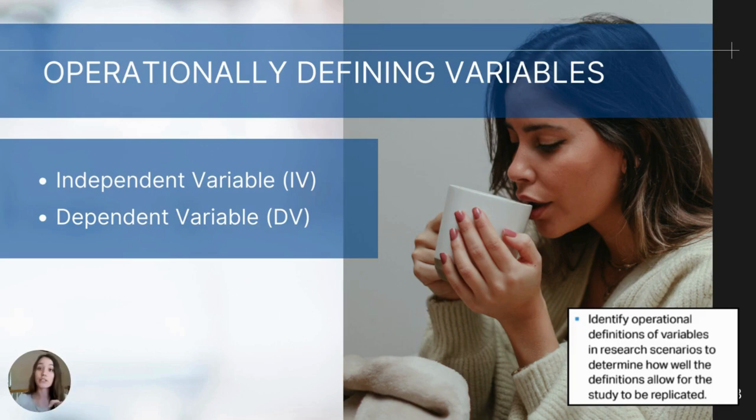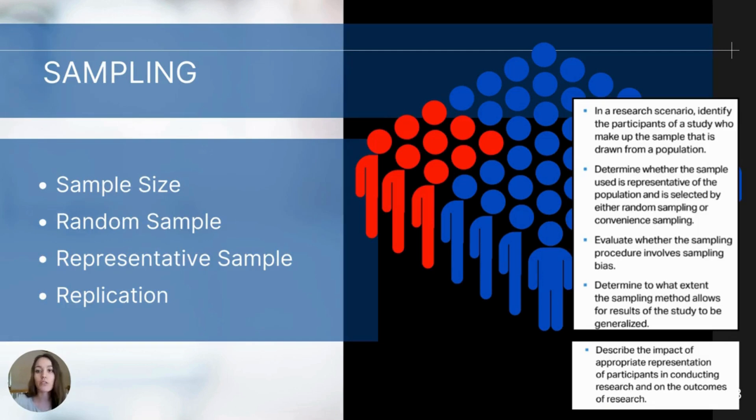They're going to be administering these assessments at two different points. The first time is before the study starts to get a baseline of the depressive symptoms. And then after the study ends, after they've taken the tea or not taken the tea, and then determining what their score is at the end of the study after those four weeks. And so that would be an operational definition of the dependent variable, how that is being measured. If you've been following along in this series, you should also be familiar with sampling. That was covered in part three. I wanted to include it in this section just so that you can see this is another step that you would need to be able to evaluate in the experimental research design process. And when you're looking at research studies, you should look at sampling and notice some of these different elements.